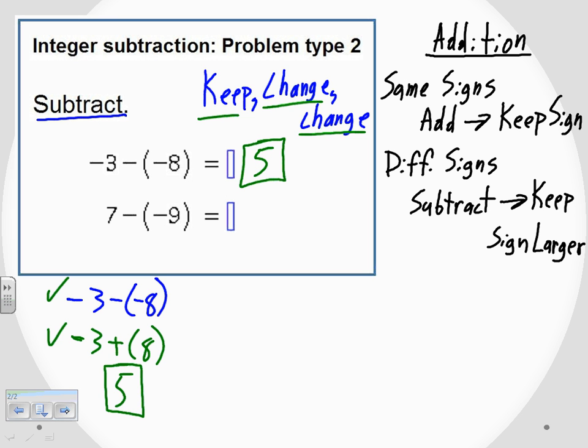So the second one, 7 minus a negative 9. I'm going to go through the same process, 7 minus a negative 9. I'm going to apply keep, change, change to turn that into an addition problem. So I keep the sign of the first number, which the 7 is positive. It's going to stay positive.